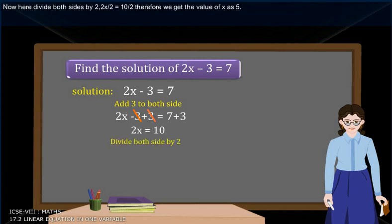Now here, divide both sides by 2. 2x/2 = 10/2. Therefore, we get the value of x as 5.